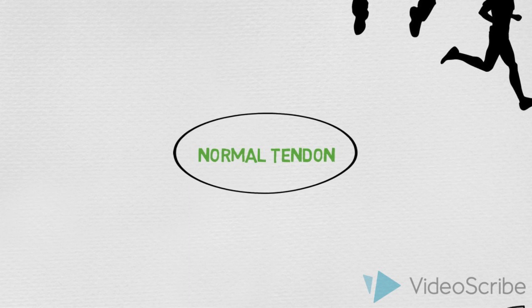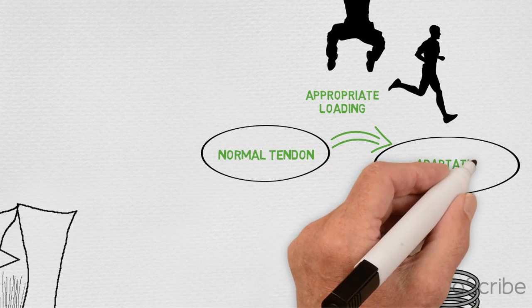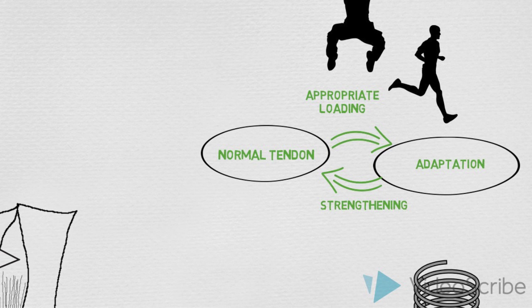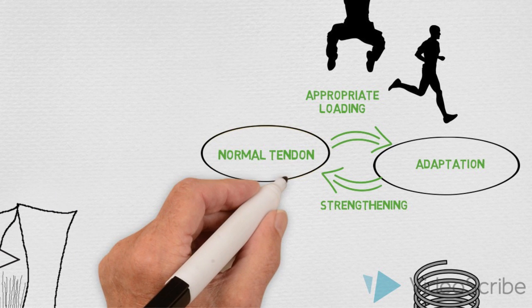When a tendon is loaded appropriately it adapts by strengthening. It becomes stronger by increasing stiffness, not by becoming thicker.